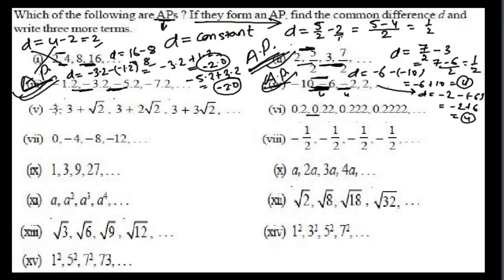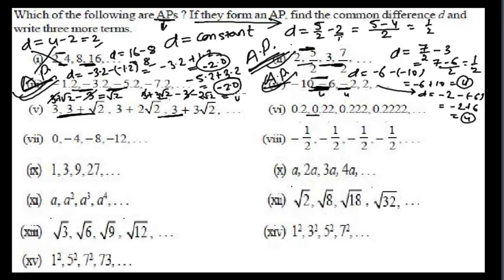Here the terms are 3, 3+√2, 3+2√2, 3+3√2. The common difference is (3+√2) minus 3, which gives √2. Checking: (3+3√2) minus (3+2√2) equals 3√2 minus 2√2 equals √2 again. Since the common difference is √2 throughout, this is an arithmetic progression.